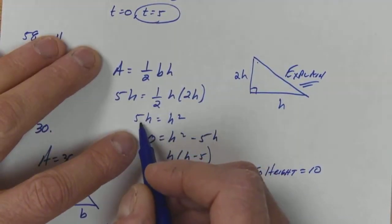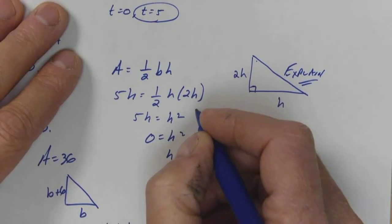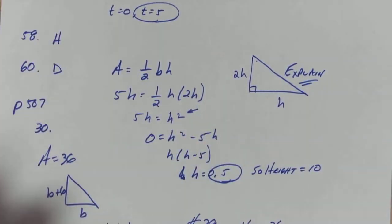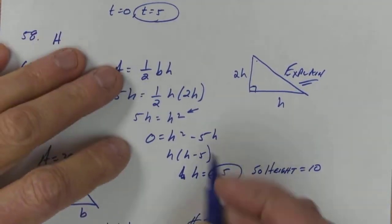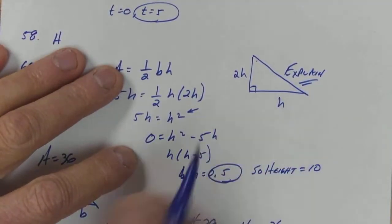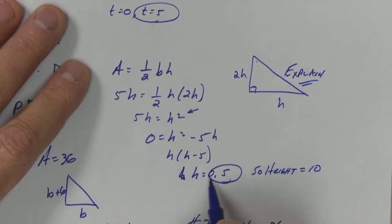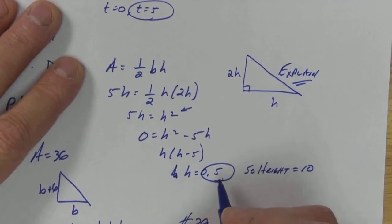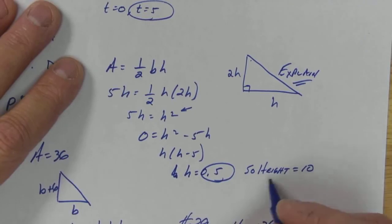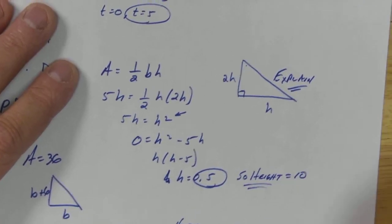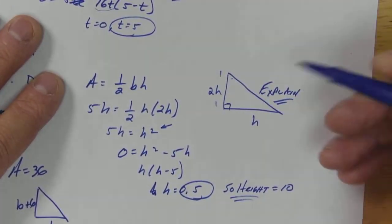Then I'm just going to simplify. One half and two are going to cancel, so I'm going to put 5h equals h squared. Remember, whenever there's an h squared, you have no choice but to get it set equal to zero and factor. So I'm going to move my 5h over, so it ends up negative 5h. Take an h out and we get zero and 5. So my h is 5, but they're asking for the height, so the height of this is twice that, so my height is 10.